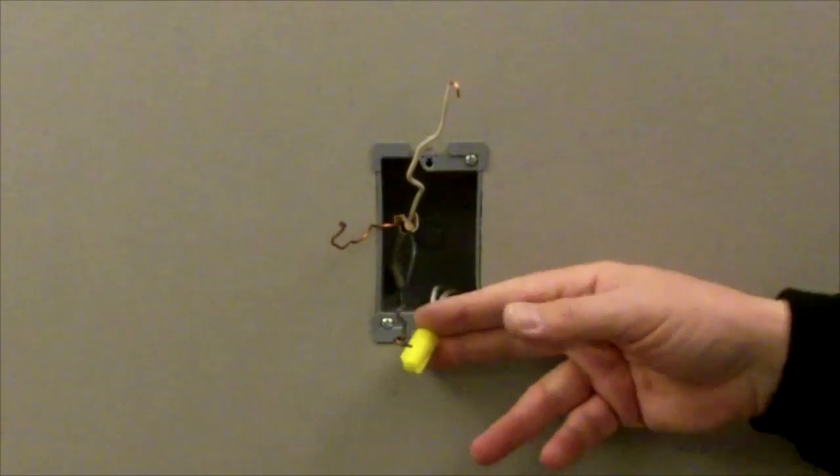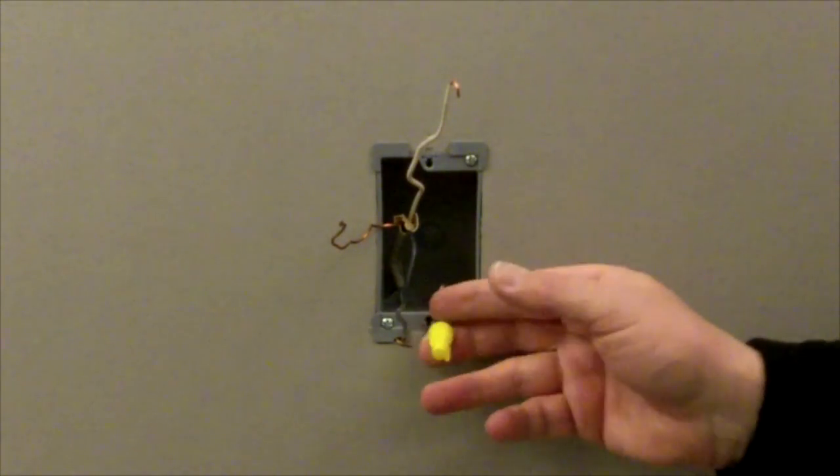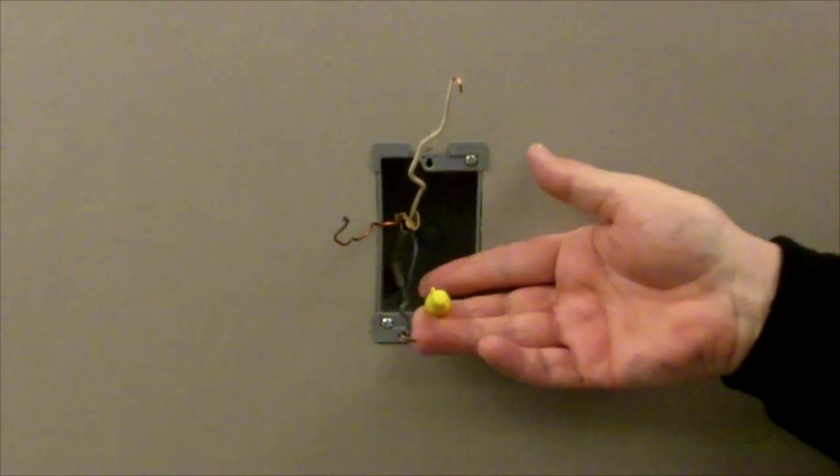To install the RT1 time switch, a neutral wire must also be present in the wall box.